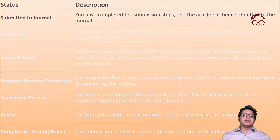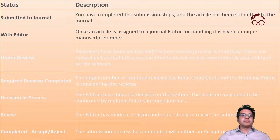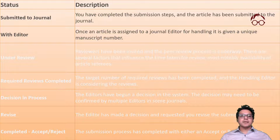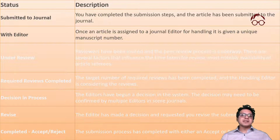The journal will assign an editor-in-chief or an associate editor and send the article to the editor. Once there is an editor handling the article, you will see the status 'With Editor,' and at this time your article will have a unique manuscript ID.